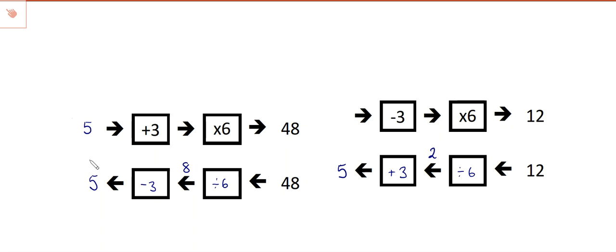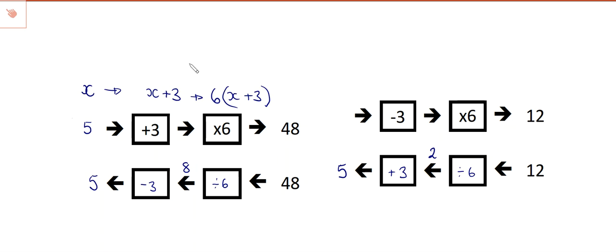I want you now to write the function and its inverse function. So what we're going to do is put x in. When I add three to x I get x plus three. Then when I multiply that by six I get x plus three, all multiplied by six. So that is the function: y equals six times x plus three.